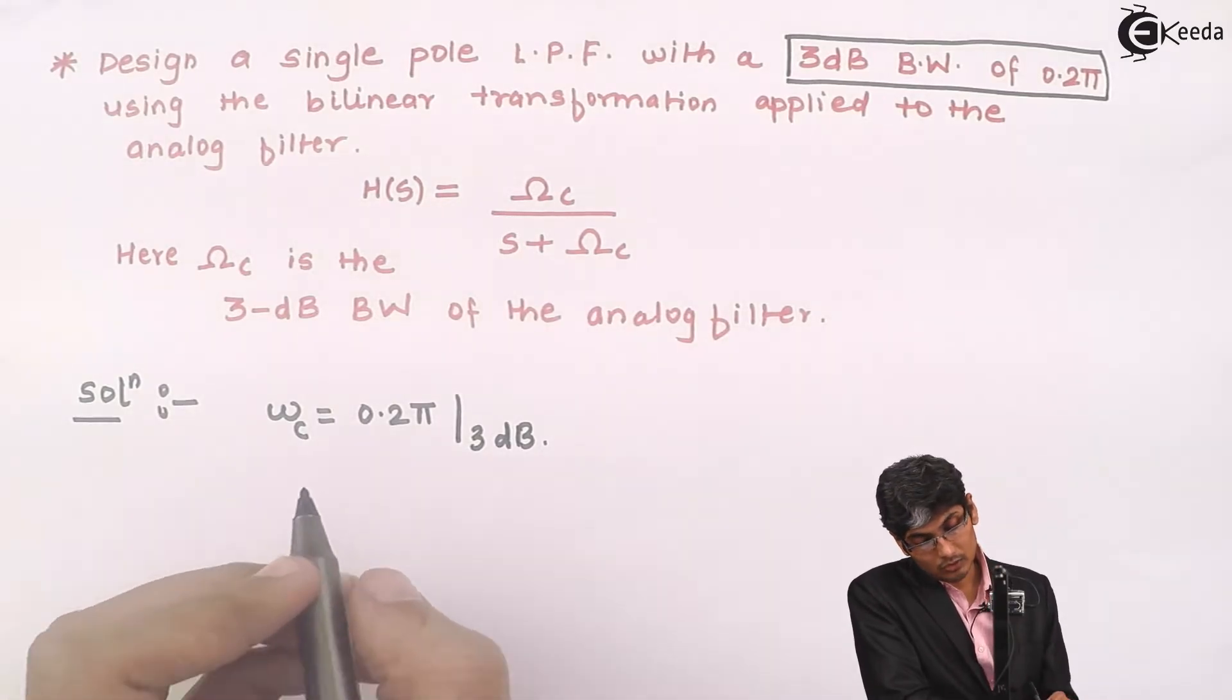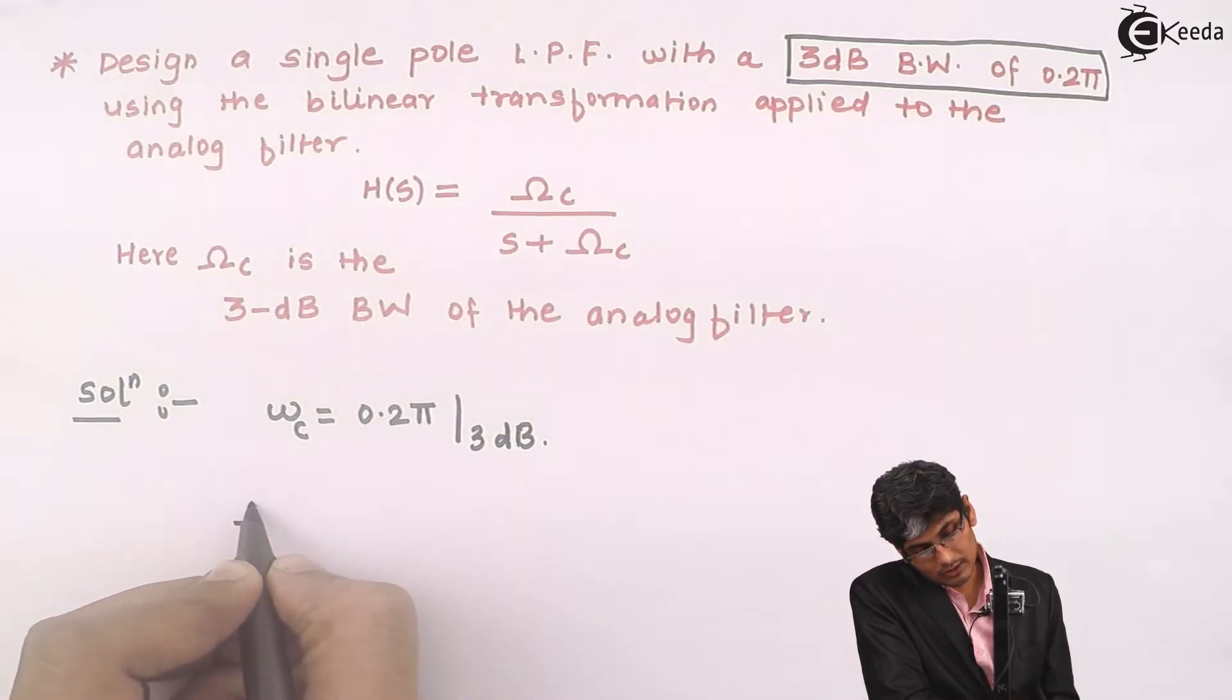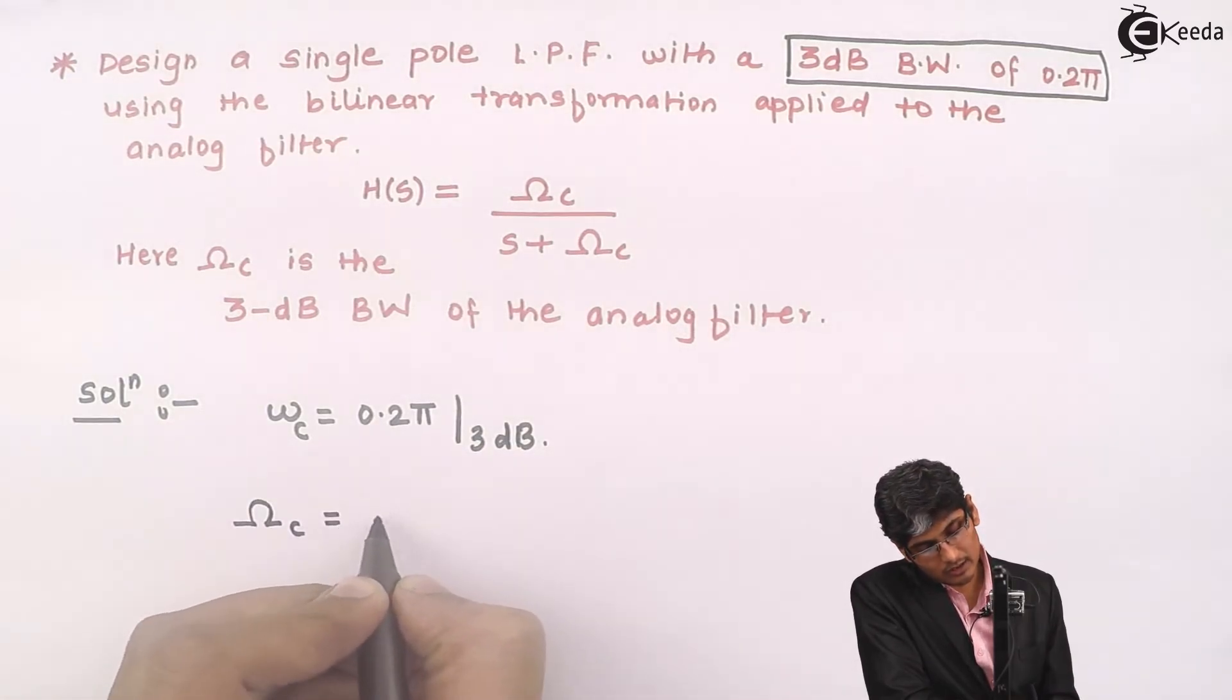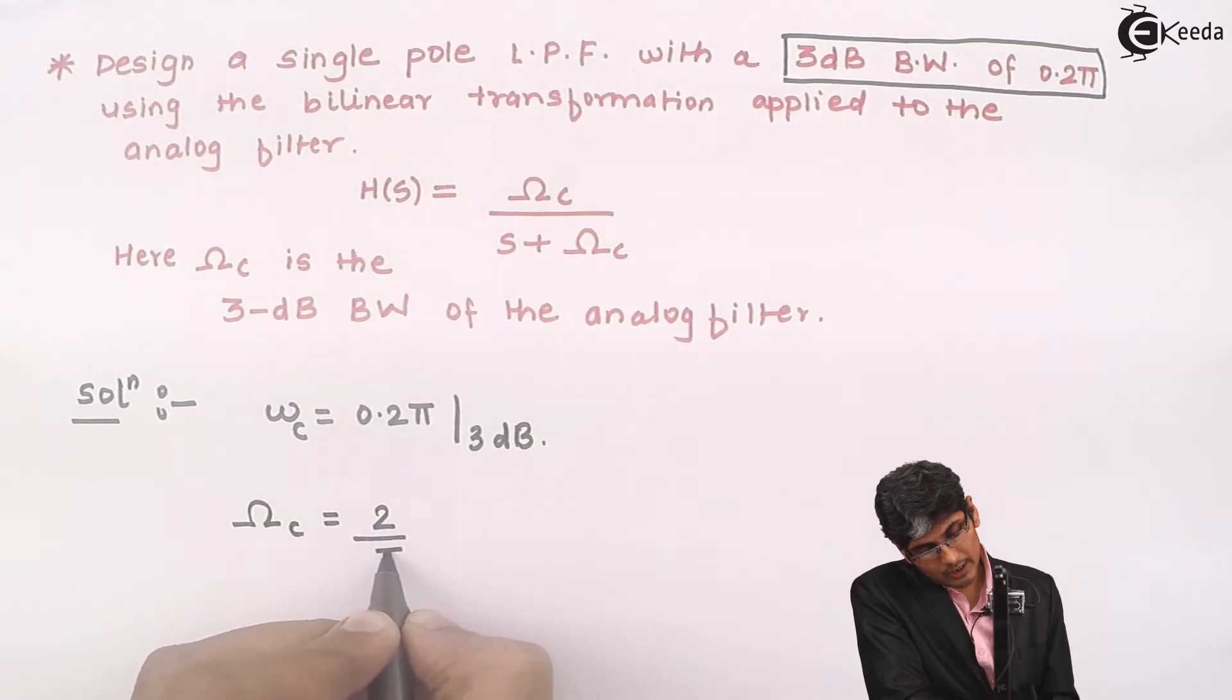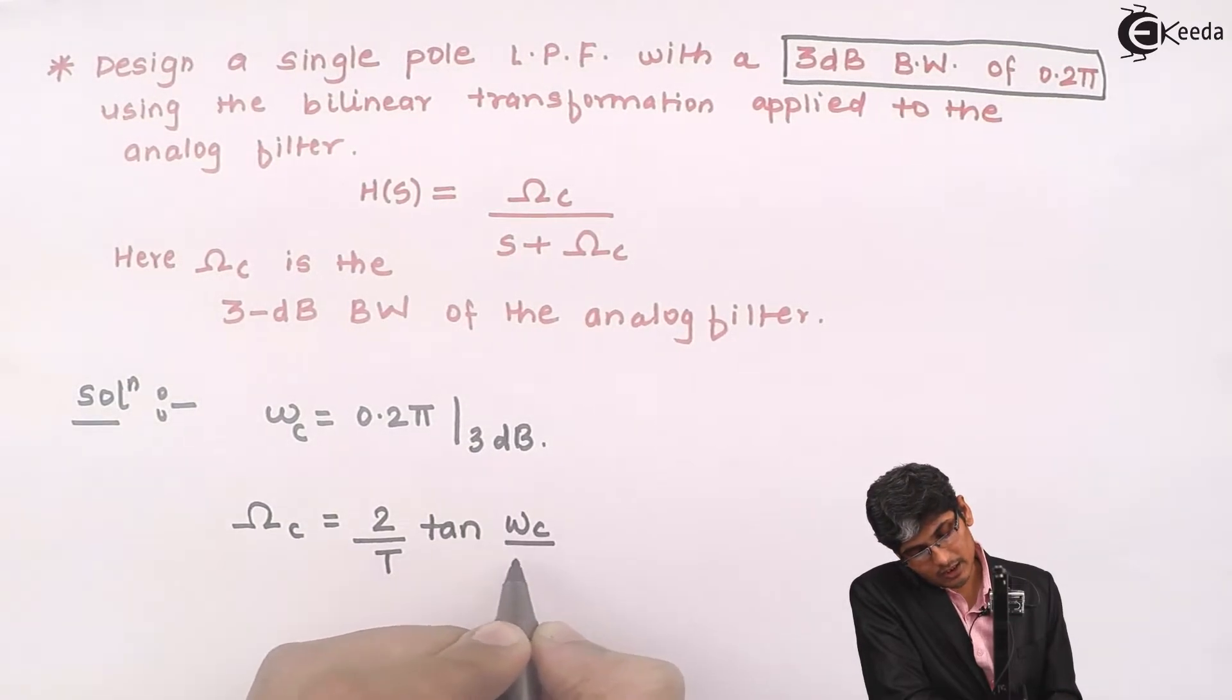Now using that and substituting into the frequency equation which says that Ωc equals (2/T) tan(ωc/2).